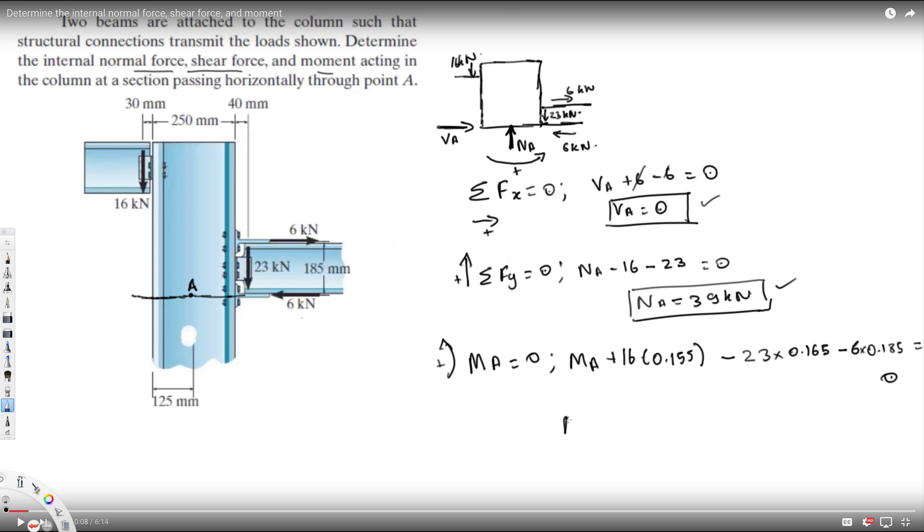If I calculate moment A, it comes out to be 2.425, and the answer is positive, therefore we know this is acting counterclockwise and it's going to be kilonewton-meter. This is my final answer, and that's all we have to find. I hope you guys like this video. See you next time.